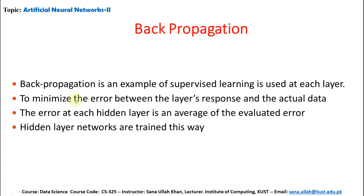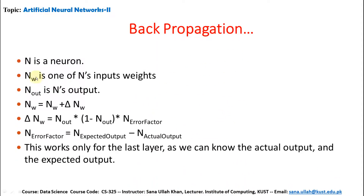What is back propagation? Back propagation is an example of supervised learning used at each layer to minimize the error between the layer's response and the actual data. The error at each hidden layer is an average of the evaluated error. Hidden layer networks are trained this way. Here: n is a neuron, nw is one of n's input weights, n_out is the output. The update rule is: nw = nw + delta_nw, where delta_nw = n_out * (1 - n_out) * error_factor, and error_factor = expected_output - actual_output. This works only for the last layer where we know both.